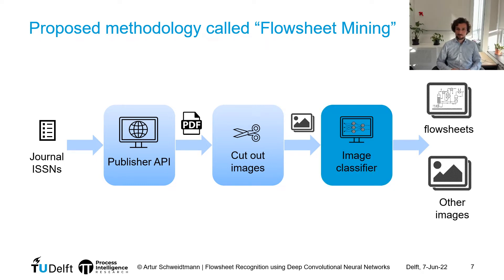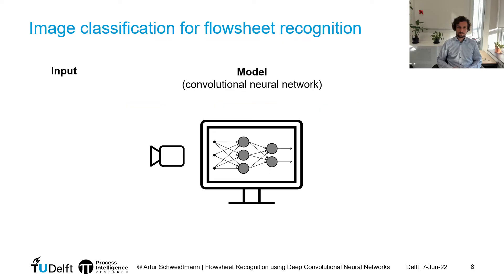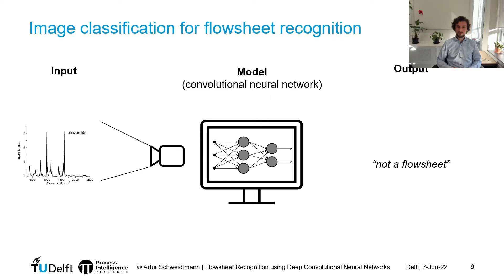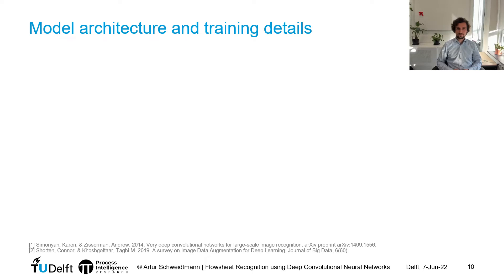So let's talk in detail about what this image classifier looks like and what it's actually doing. An image classifier for flowsheet recognition consists of a model — in our case, a convolutional neural network — which takes an image as input, for example on the left-hand side is a flowsheet image, and returns an output label for that image. In our case, this is 'flowsheet.' If we give this model something other than a flowsheet, it will return the corresponding output: 'not a flowsheet.'